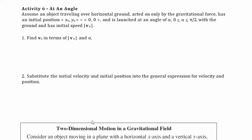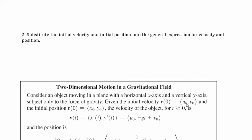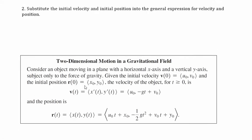We've been looking at two-dimensional motion in a gravitational field — the only force acting on the object is gravity. In the last example we were able to determine the initial velocity because it was moving horizontally. Now we want to think about: what if we knew the initial position and the angle it was being projected at, but not the initial velocity?